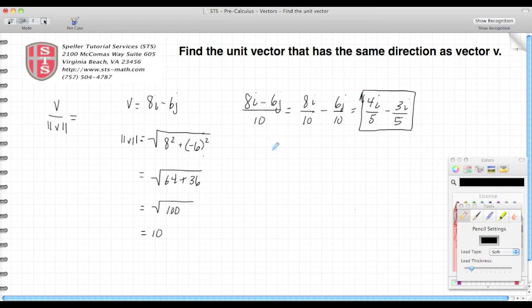But let's go ahead and verify that this new vector has a magnitude of 1. We'll call this new vector u. To find the magnitude of u, I'm going to take the square root of the sum of the two components.